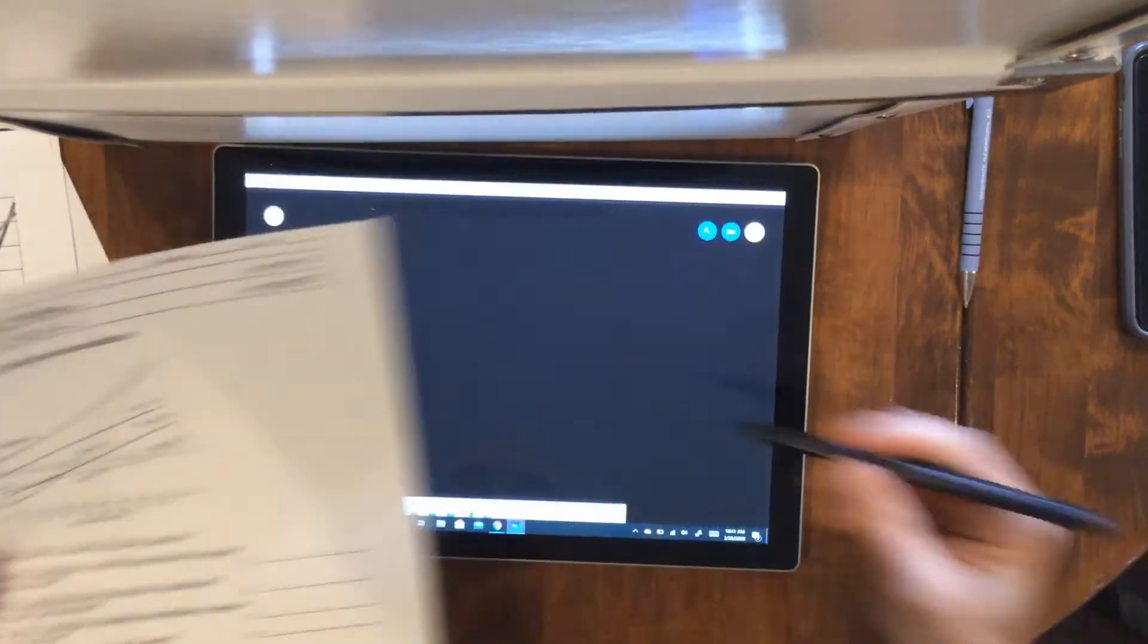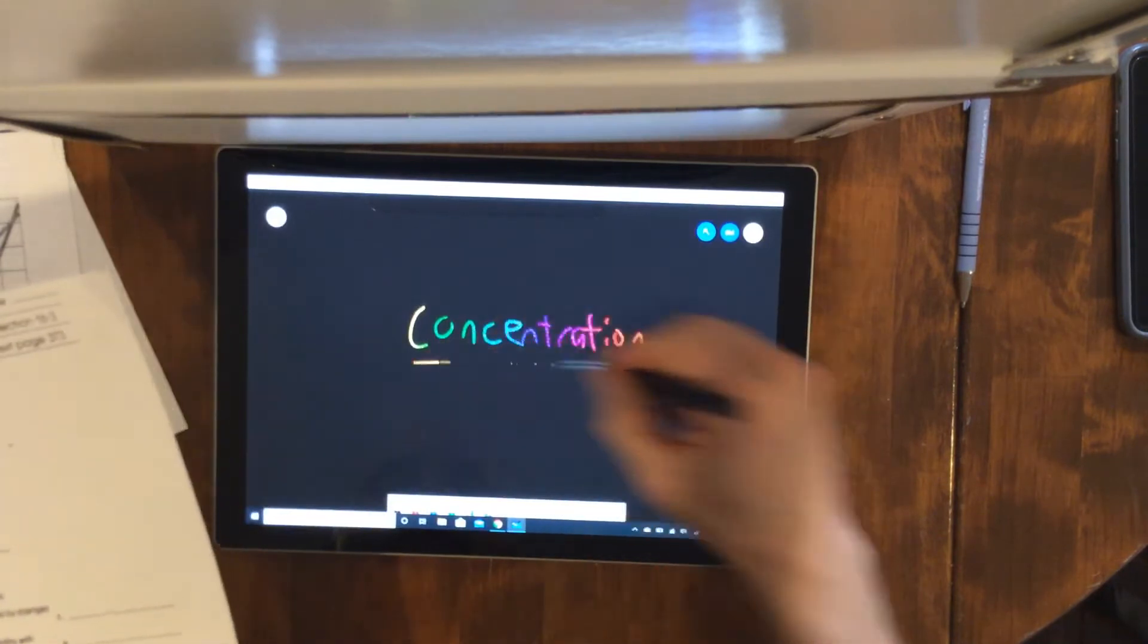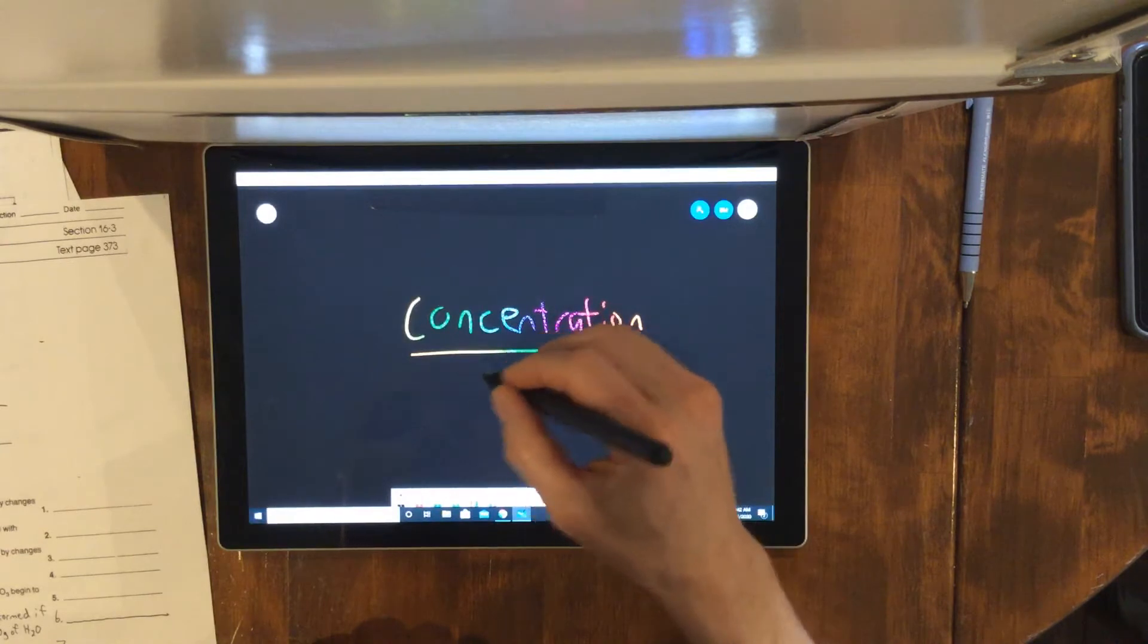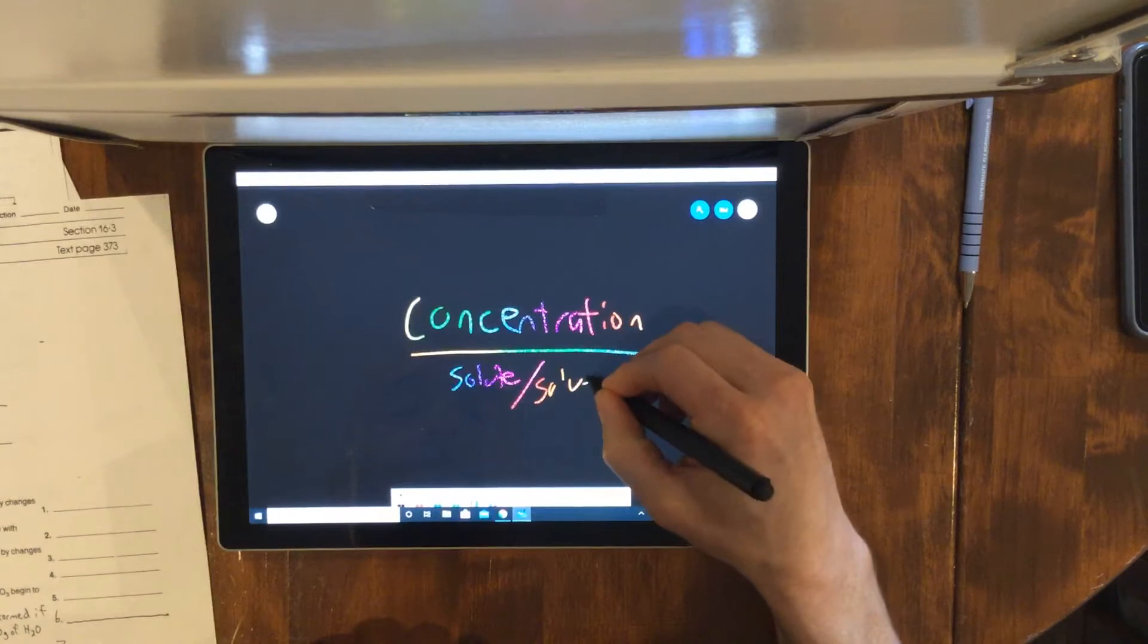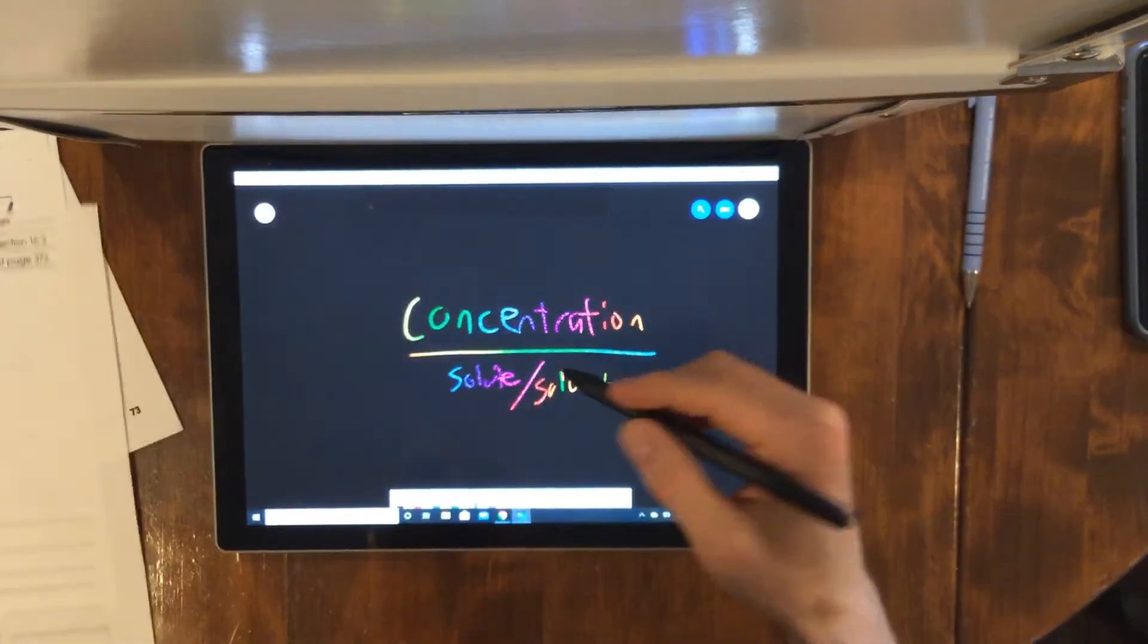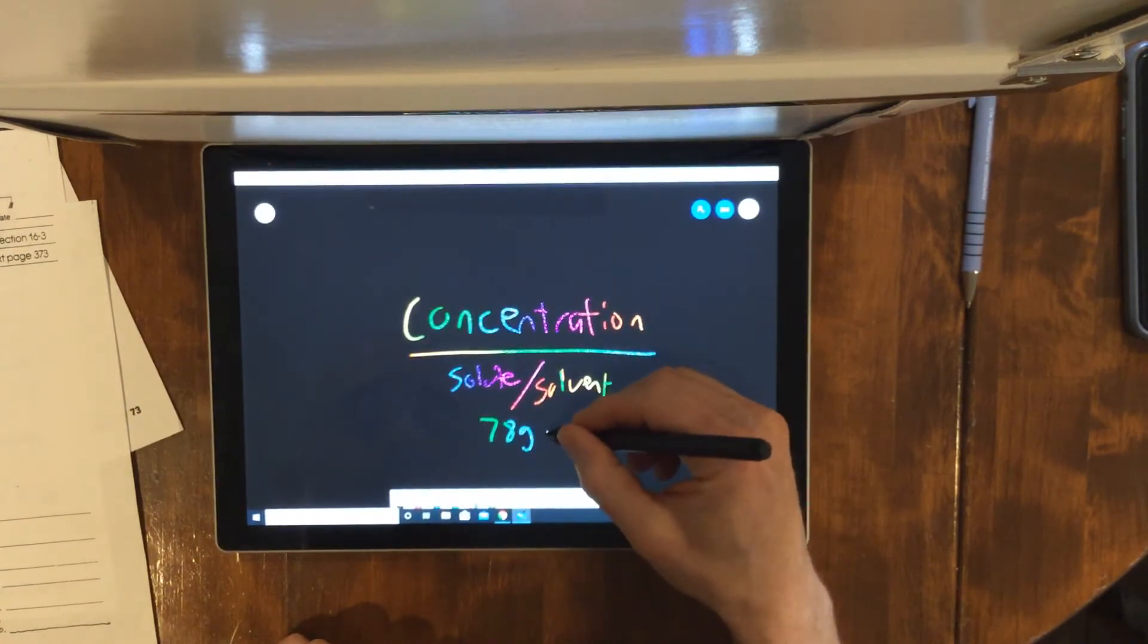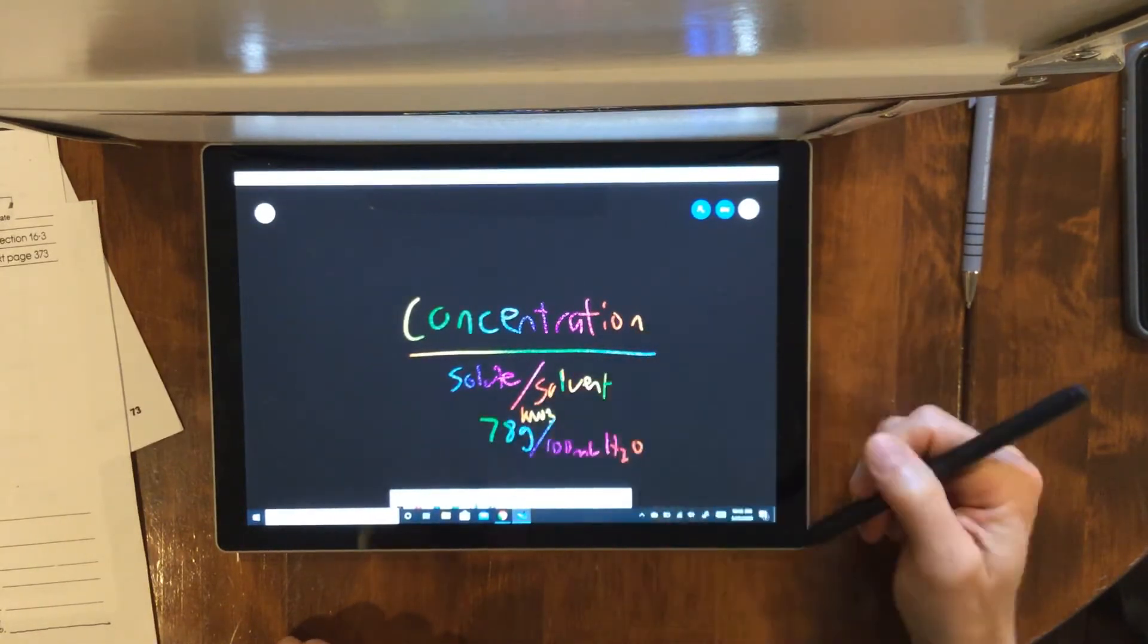So concentration - that word basically means, and that's where we're headed here in this unit - is how much solute per solvent. So it's an amount. The concentration of KBr at 50, we would write 78 grams per 100 milliliters of H2O. That's a concentration.